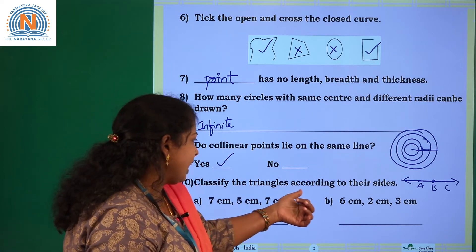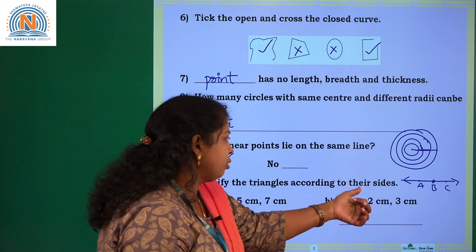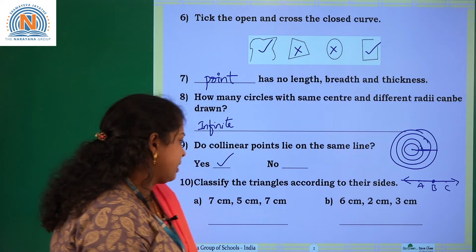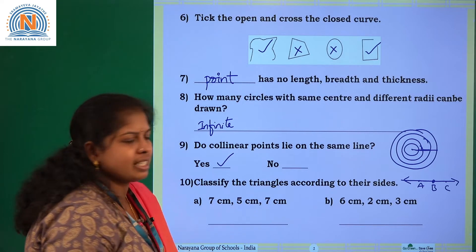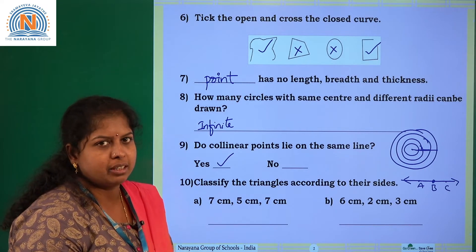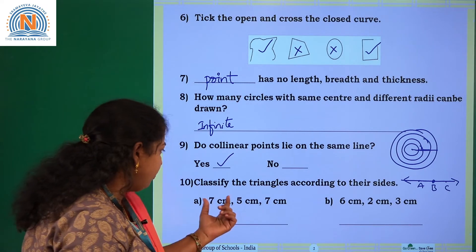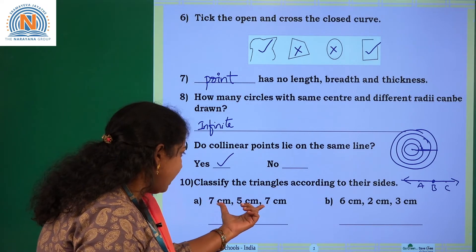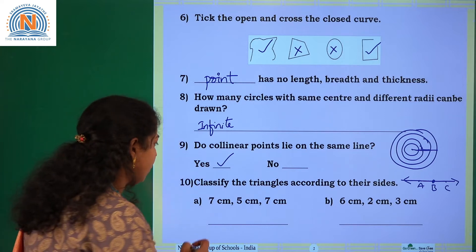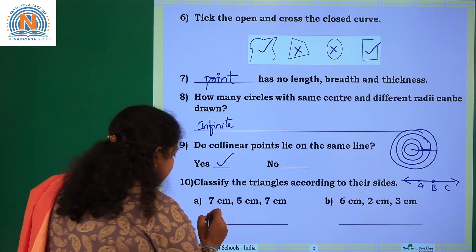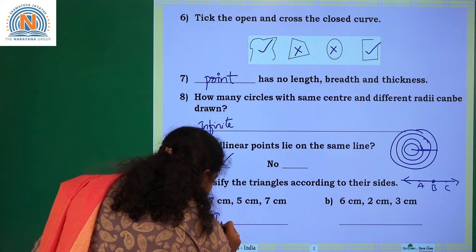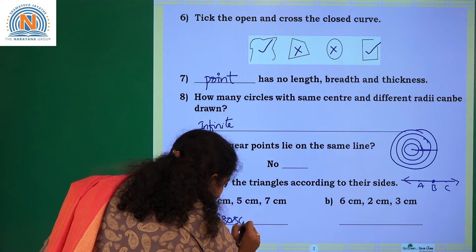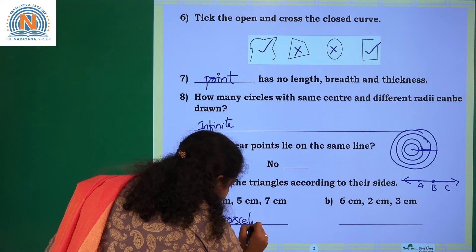Classify the triangles according to their sides: 7 centimeters, 5 centimeters, and 7 centimeters. If two sides are equal, then you can call the triangle an isosceles triangle. So this is an isosceles triangle.